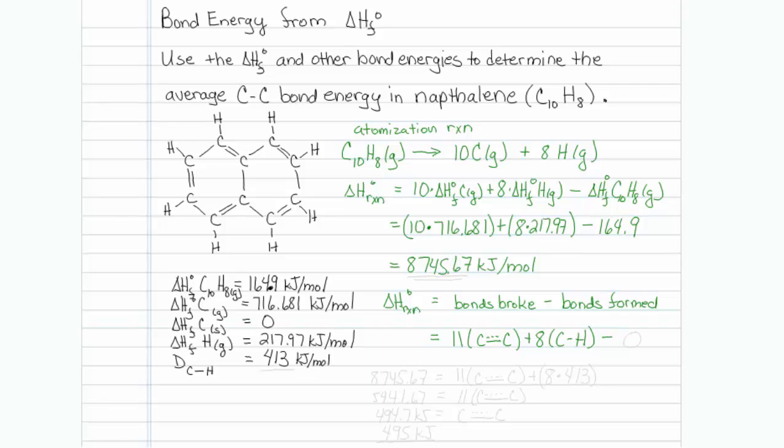Now the number of bonds formed is 0 because we made atoms. All right, well what we can do is take this value, which we found from heats of formation, and set it equal to bonds broke minus bonds formed. So I will write that here.